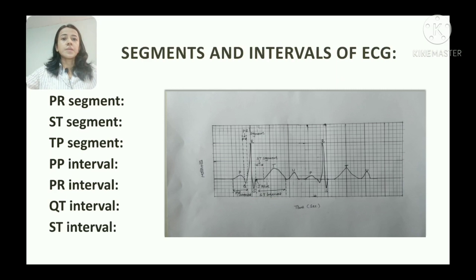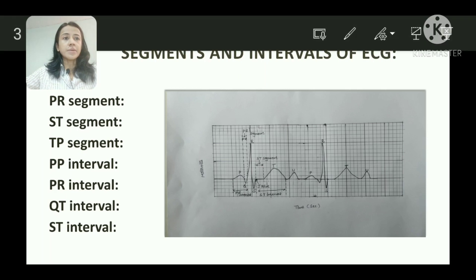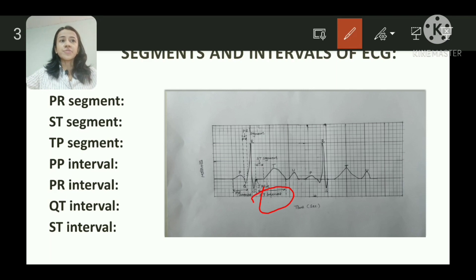Next is the ST interval. As seen in the diagram, the ST interval is the interval between the end of the S wave to the end of the T wave. Its normal duration is 0.32 seconds and it corresponds with ventricular repolarization.